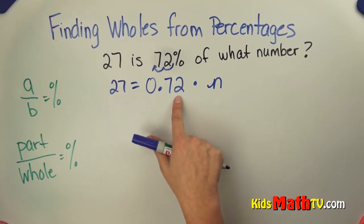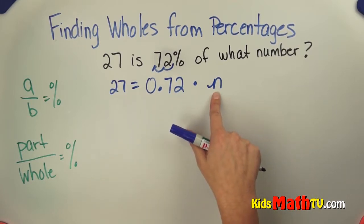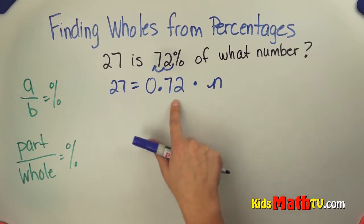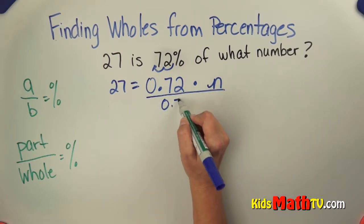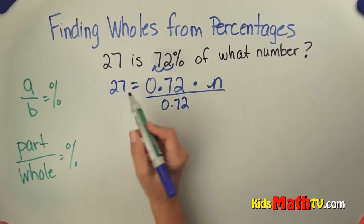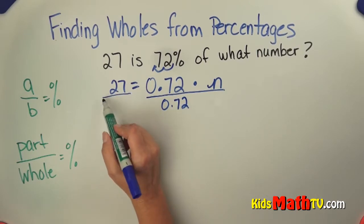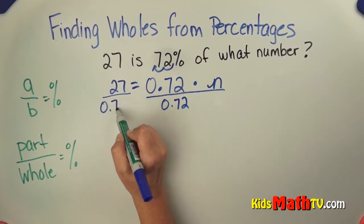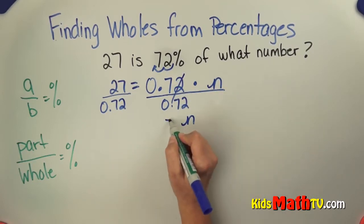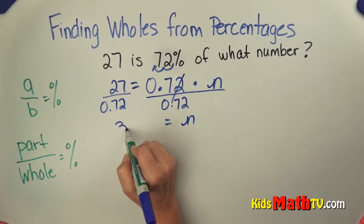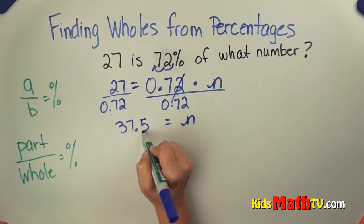27 equals 0.72 times N. Now I have N with my 72 hundredths, so I'm simply going to isolate that variable by using the inverse operation. Divide by 0.72 on that side, and divide by 0.72 on that side. When I do that, N equals 37.5.